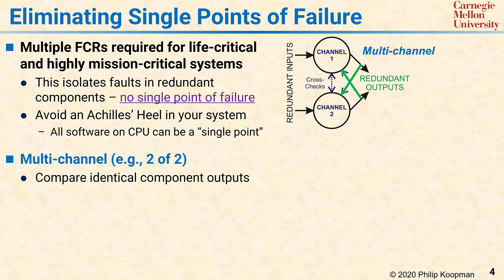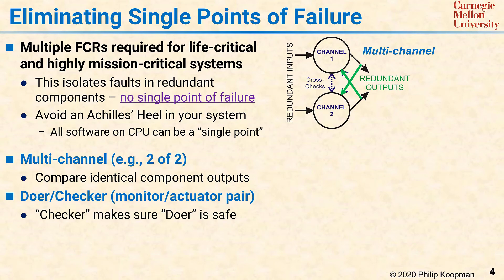Each channel is designed to be a separate fault containment region. Any mismatch between channel outputs indicates a computational failure. A two-of-two architecture can be extremely effective at mitigating hardware faults. However, because the same software is running in both channels, the software must, for practical purposes, be perfect — for example, by developing that software to a high safety integrity level.